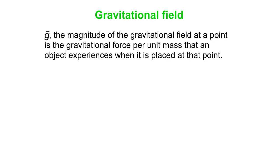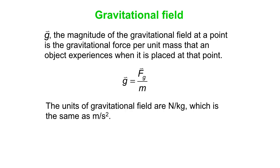Let's talk about the gravitational field — we'll use little g for that. Anything with mass sets up a gravitational field around itself. It's the gravitational force per unit mass that an object experiences when placed at that point. A field has magnitude and direction at all points in space. The value of the gravitational field is the gravitational force divided by the mass of the object feeling that force. The units are newtons per kilogram, which is exactly the same as meters per second squared.